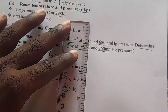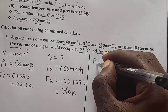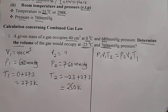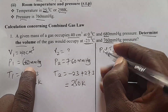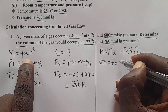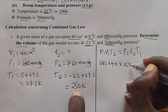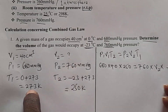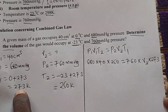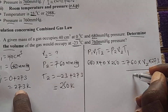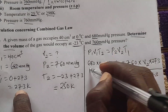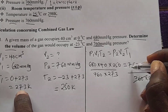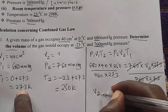Using the combined gas law formula, P1V1T2 = P2V2T1. Inserting values: 680 × 40 × 250 = 760 × V2 × 273. To get V2, divide both sides by 760 × 273. So V2 = (680 × 40 × 250) ÷ (760 × 273).